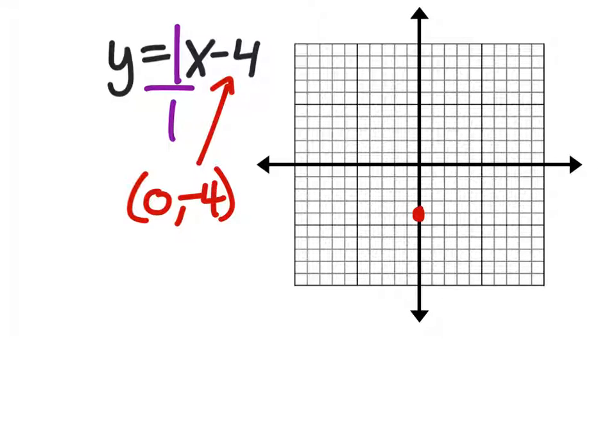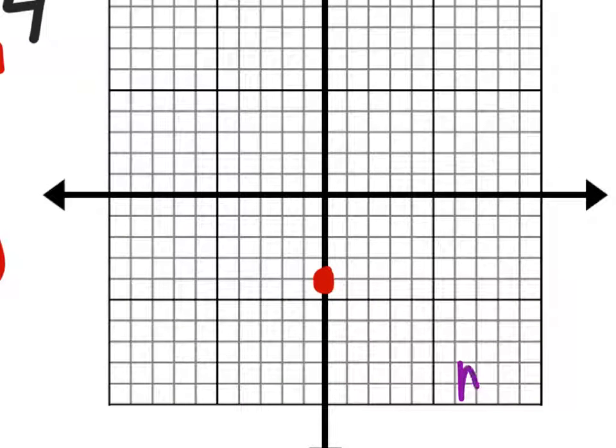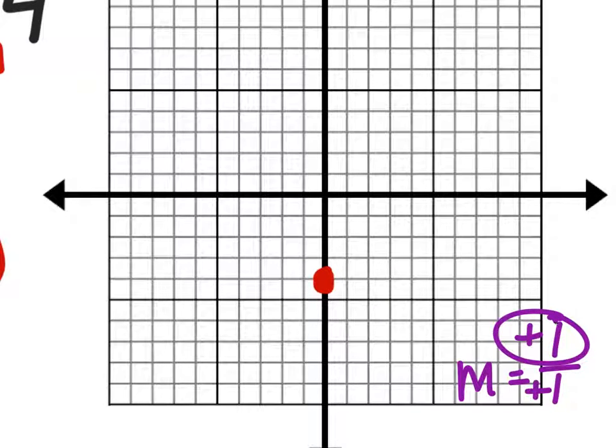So if I zoom in on this, I know that my slope is one over one. Both of these are positive. So this positive one means I'd go up one and then to the right one, which would give me this next point. And I can use this kind of like a stair step or a staircase to find all of these other points. You guys see that okay?